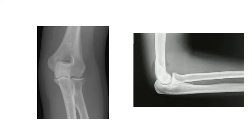So in this joint we can identify the trochlea, the capitulum, the head of the radius, and the coronoid process as the articular surfaces of this joint. The rest of these portions are non-articular surfaces or parts.